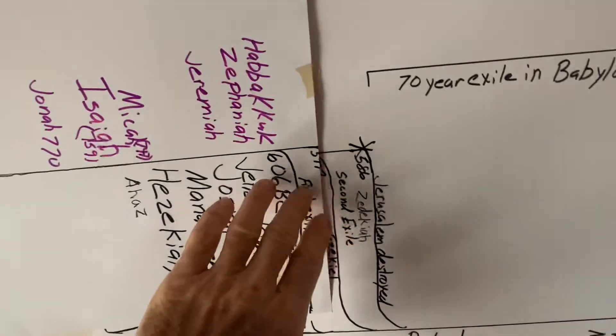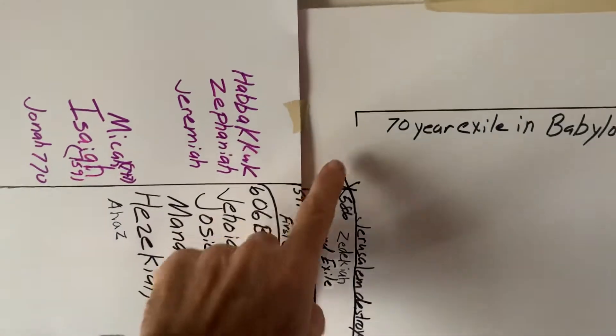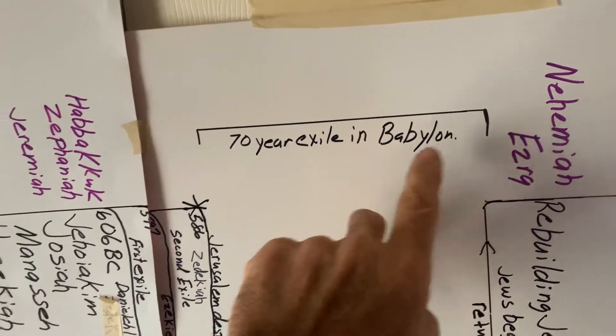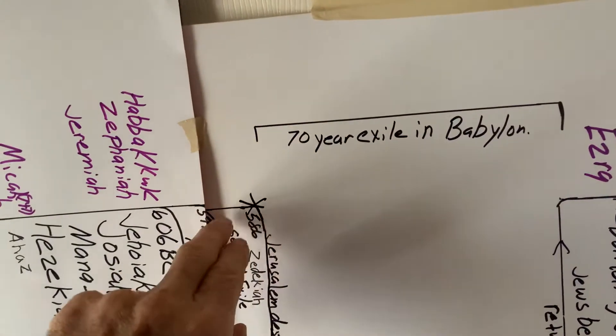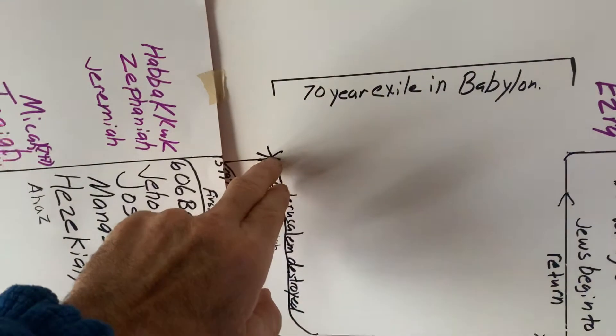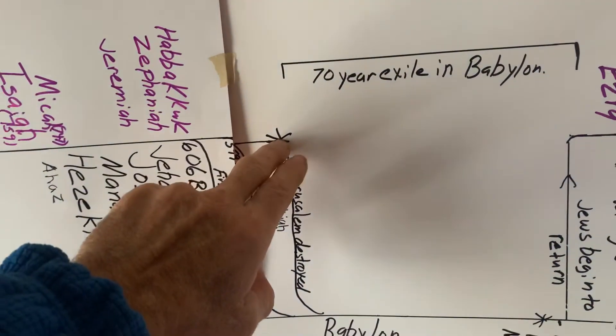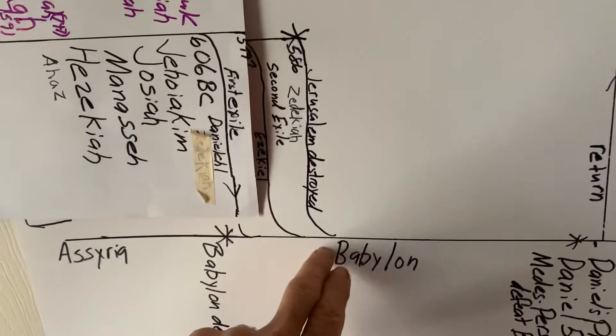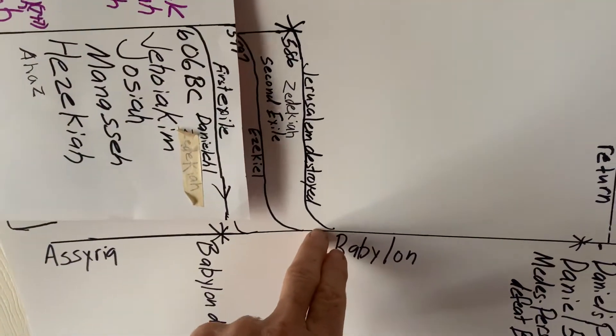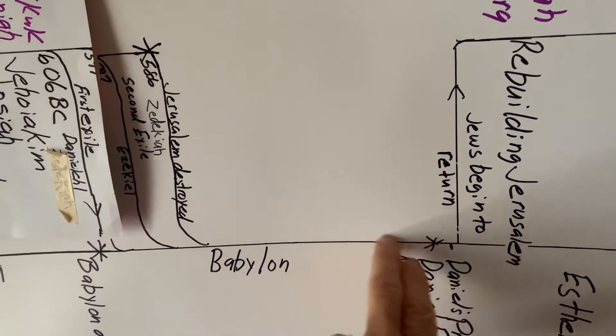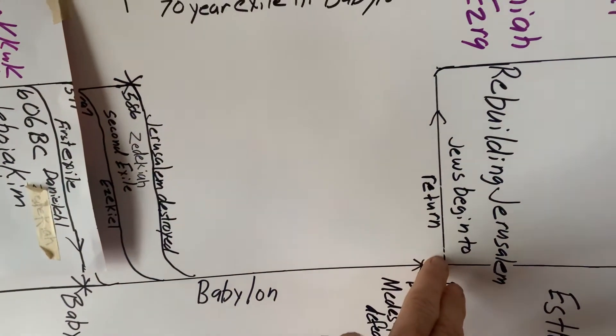So here's what's important. There is a 70-year exile in Babylon that takes place when history is really not moving forward at all in the land of Israel or in the land of Judah. Any who survived, the Jews are now in Babylon under judgment for 70 years until 70 years are completed. Then God says,